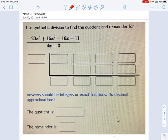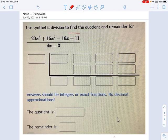We're going to continue on using synthetic division to divide this big polynomial up here, this negative 20x cubed thing, by the term 4x minus 3.